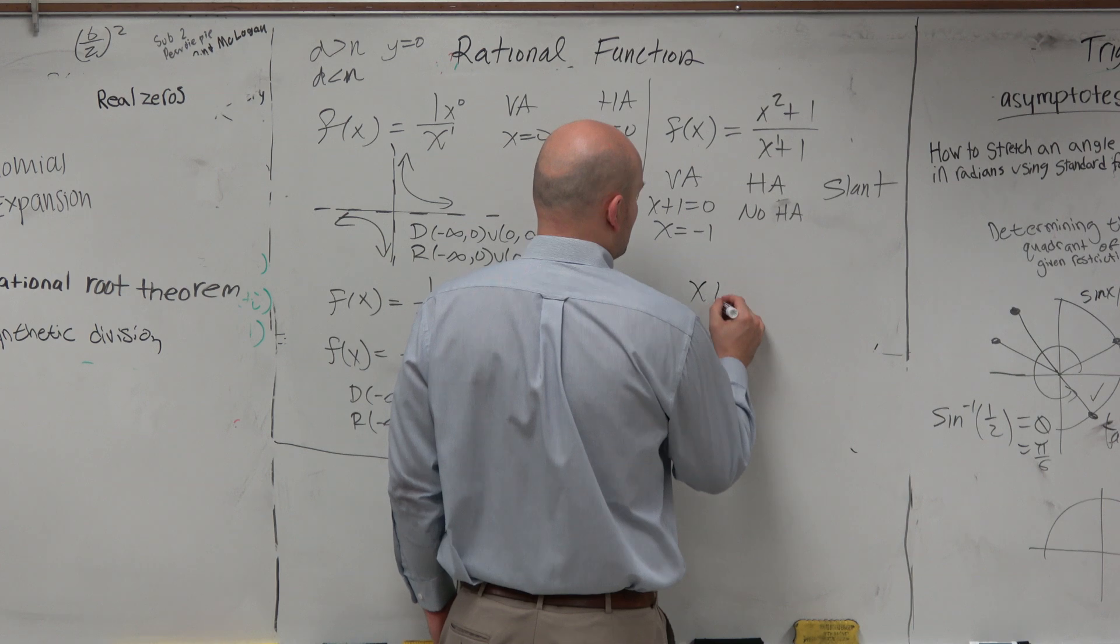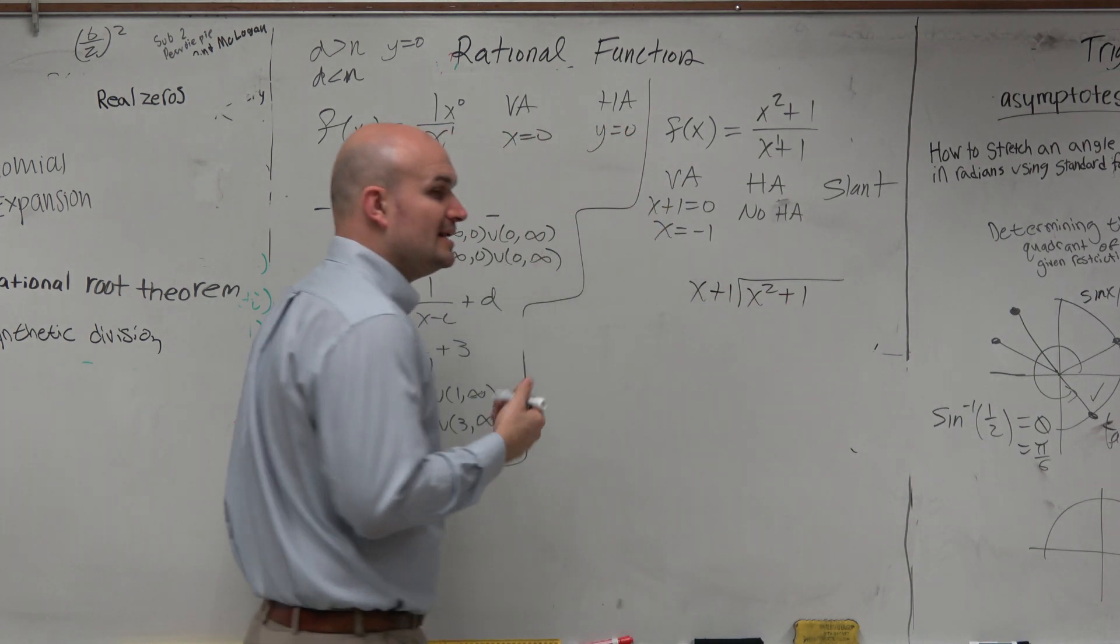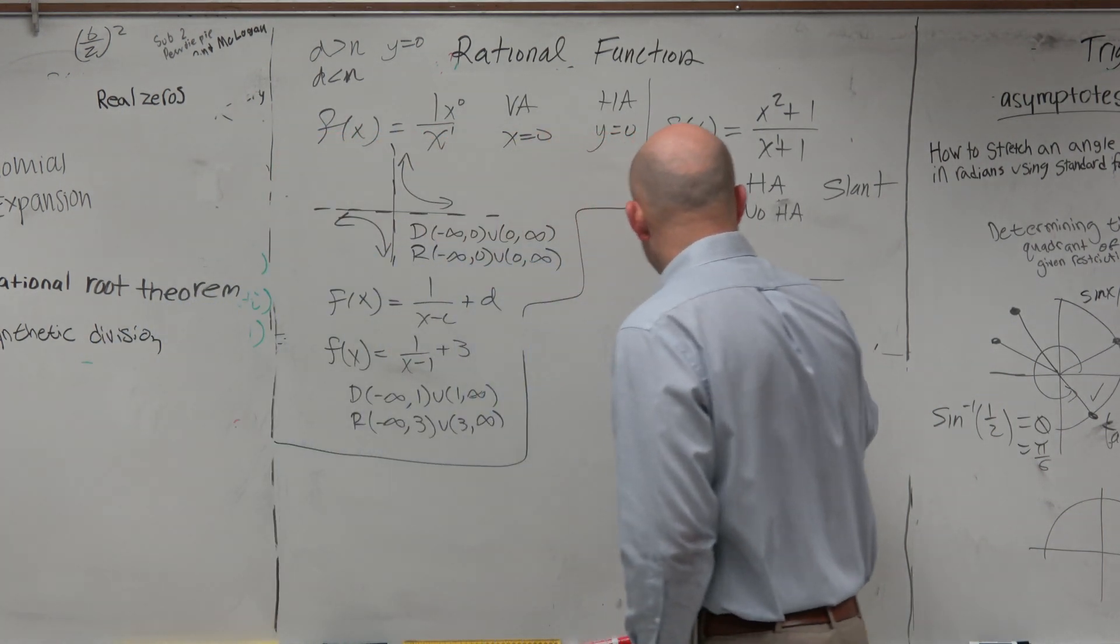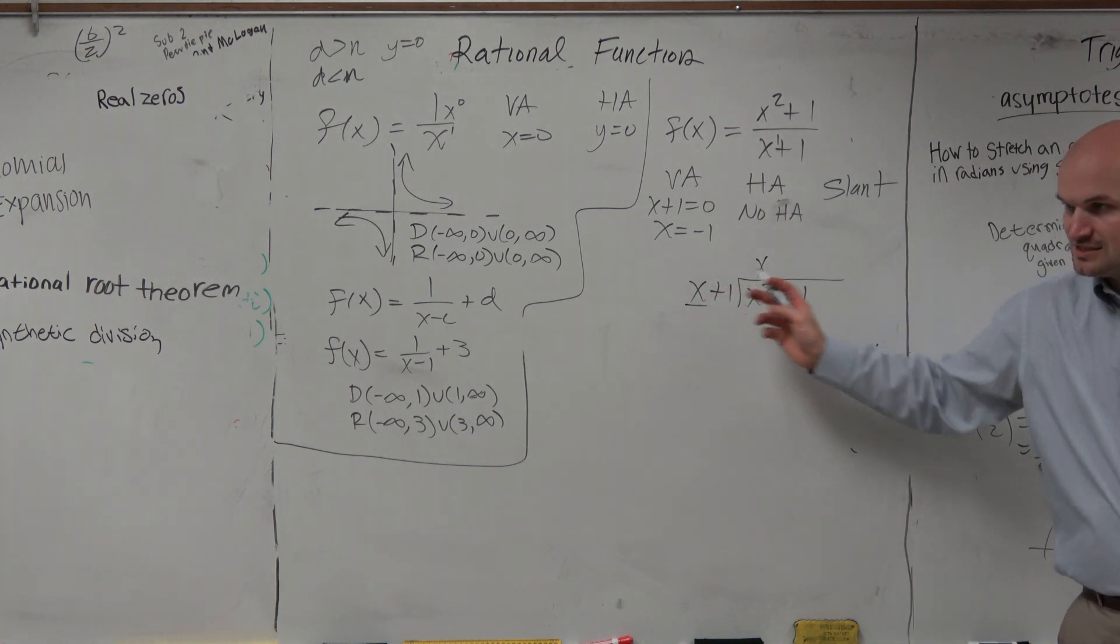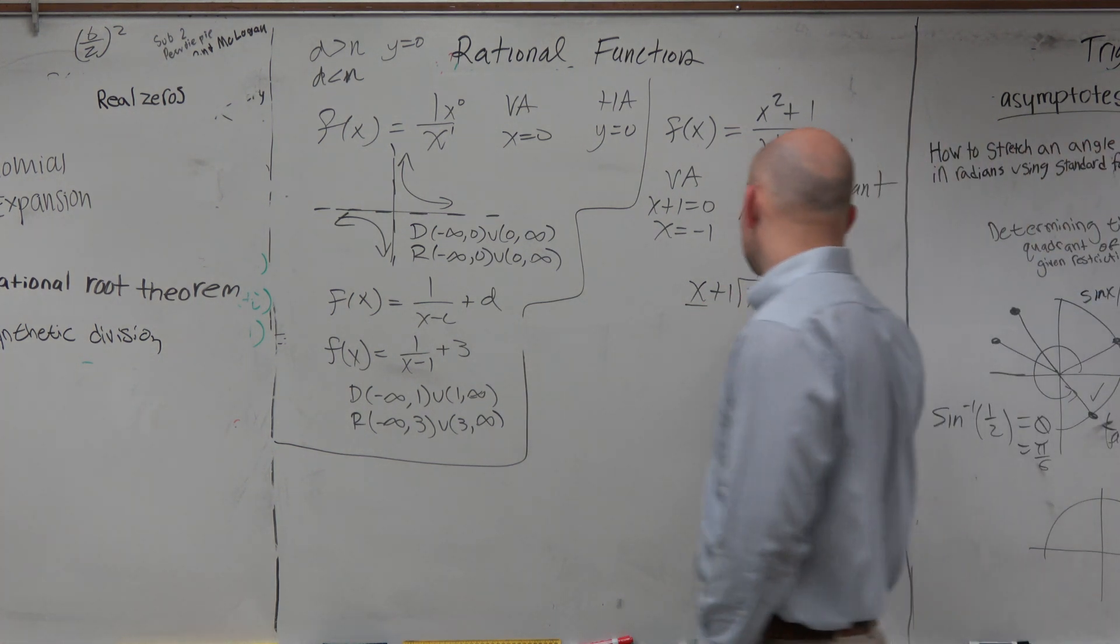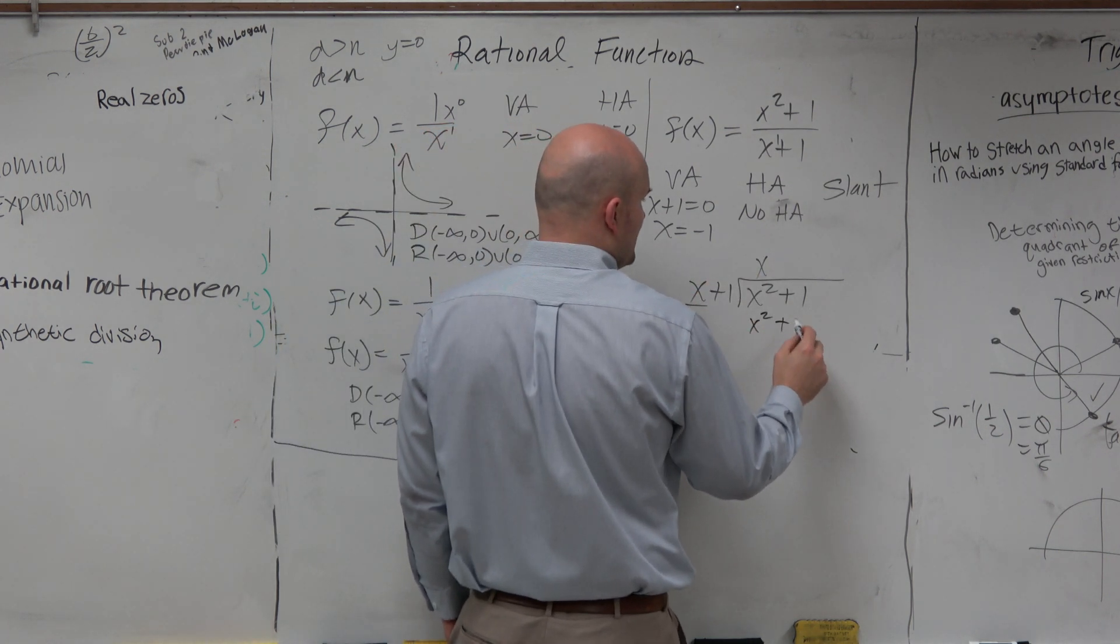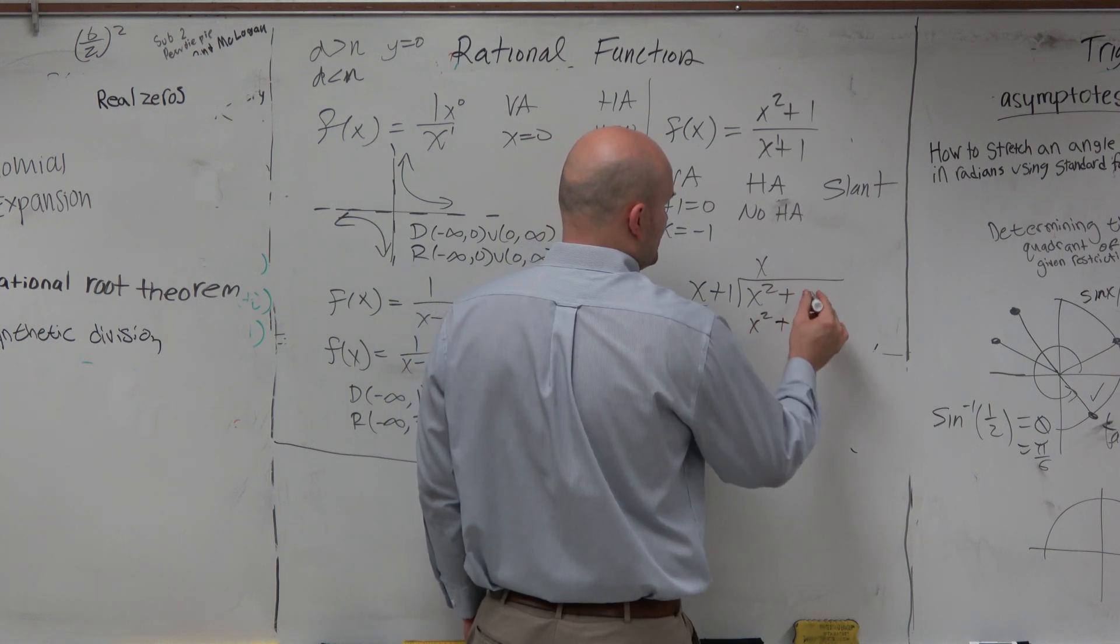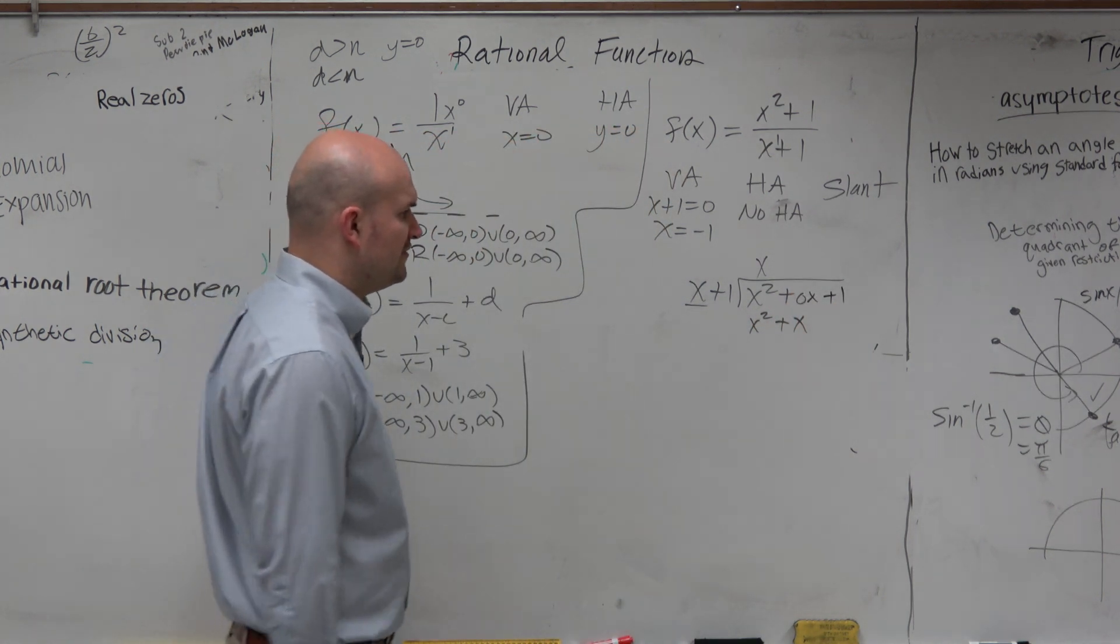So we say x plus 1 divides into x squared plus 1. And now we're just going to check with our long division. So we take our first term x, divide into x squared. We get x, right? x divided into x squared, x times. x times x is x squared. And then x times 1 is going to be a positive x.